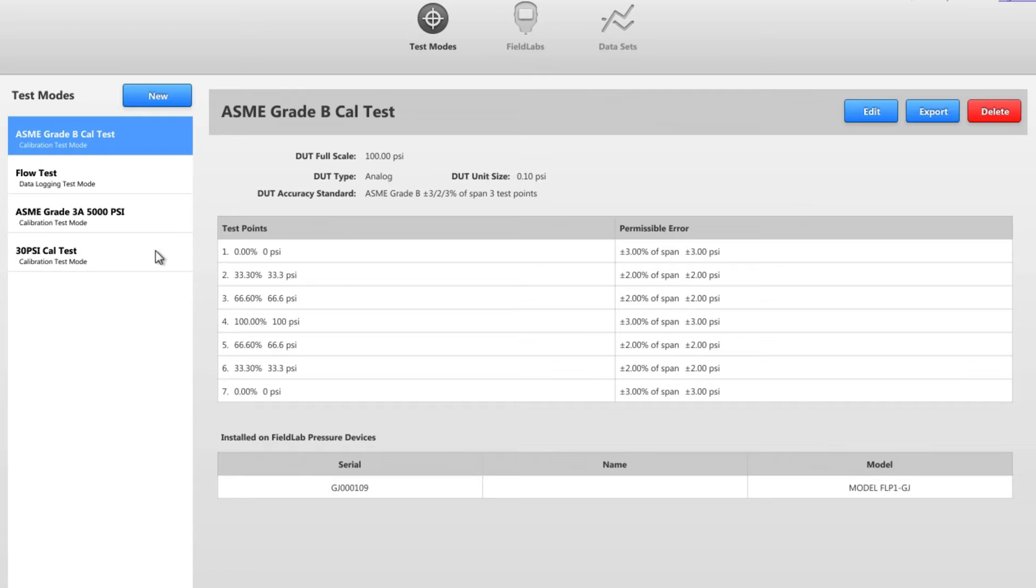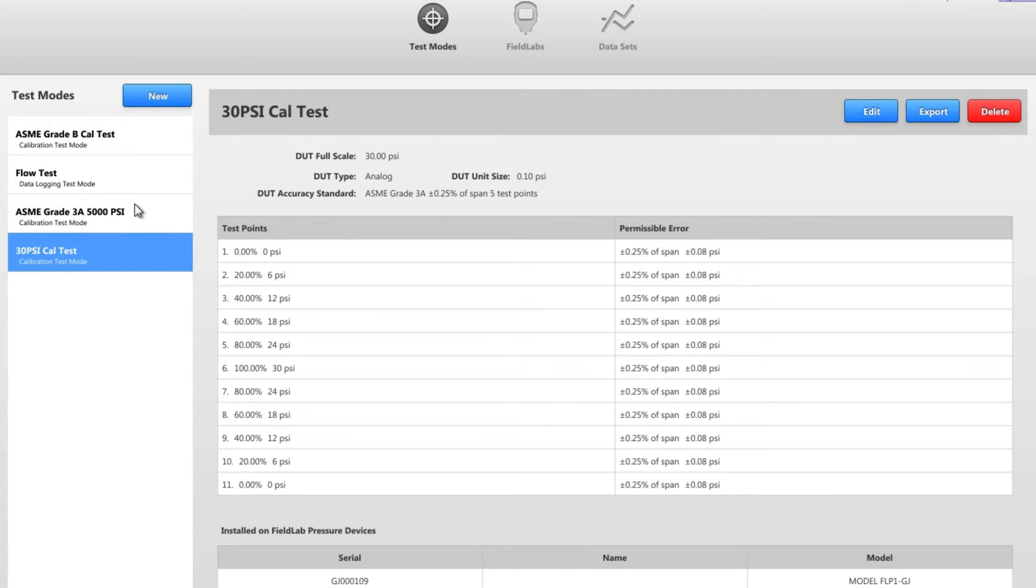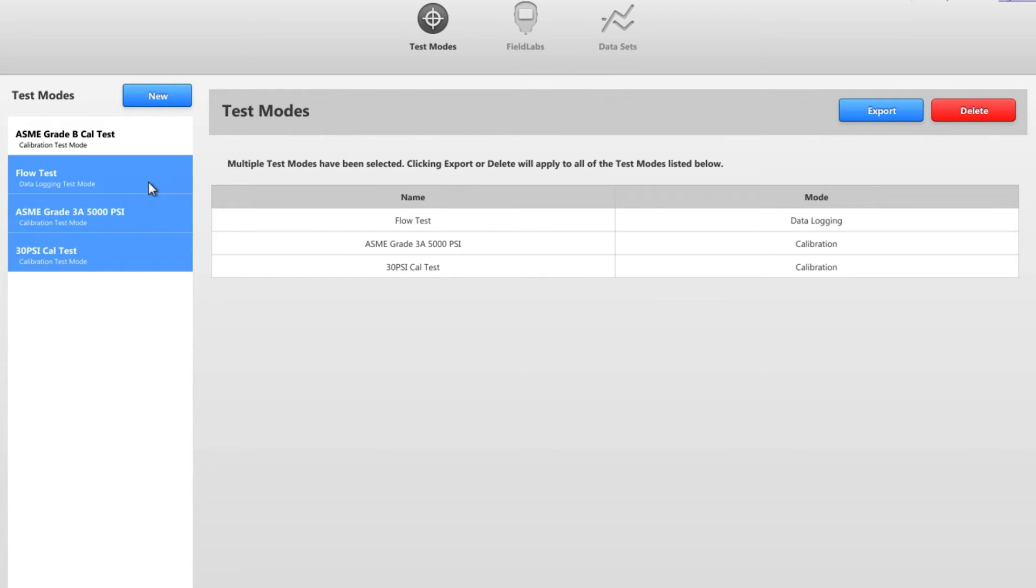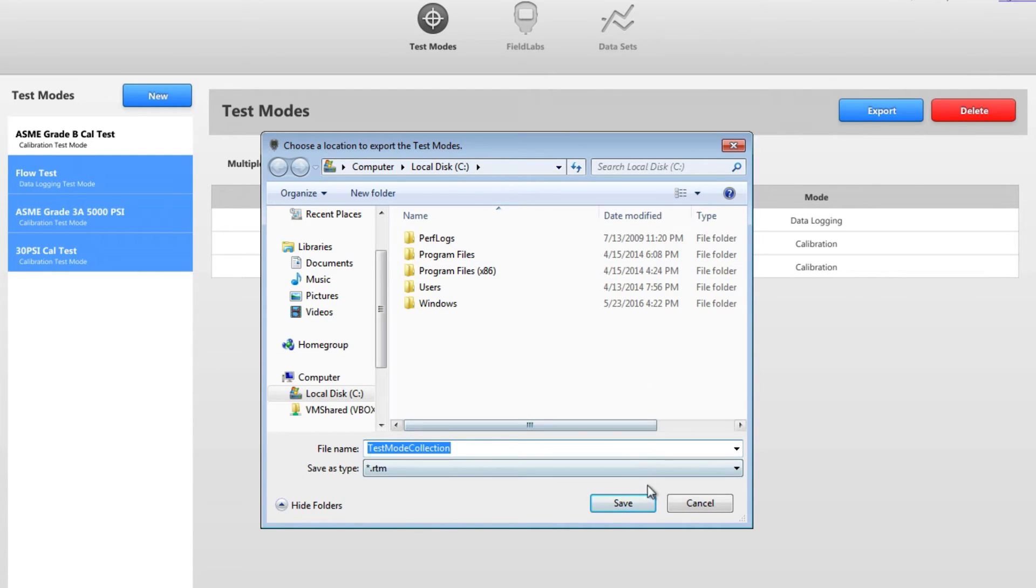To share a test mode, select the test, or you can hold down control and select several, then click export. You can choose the location on your computer where you want the files to reside.